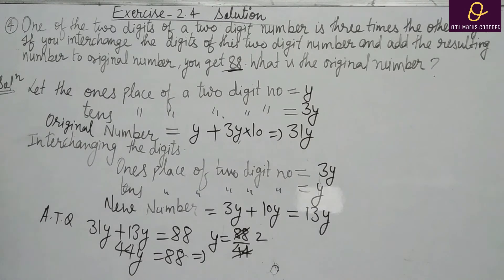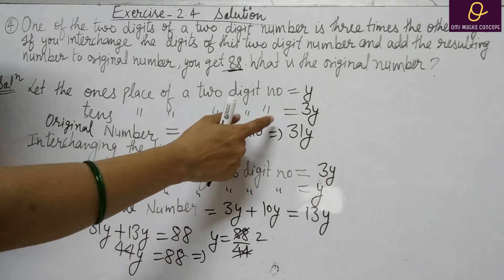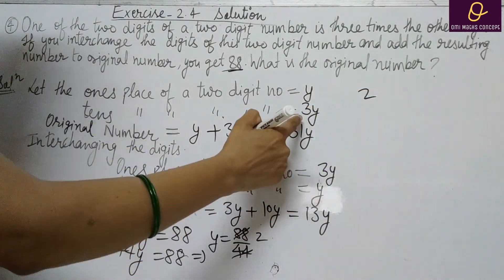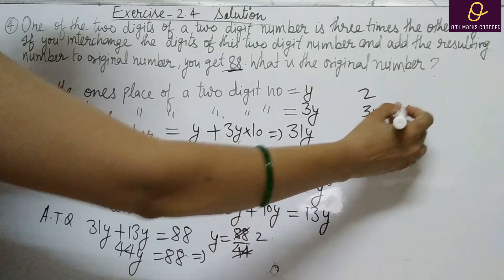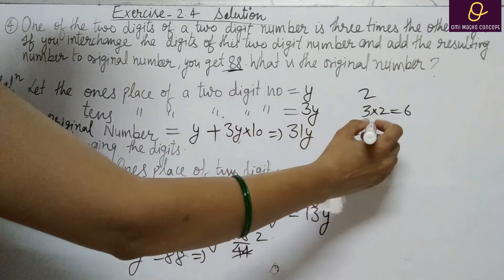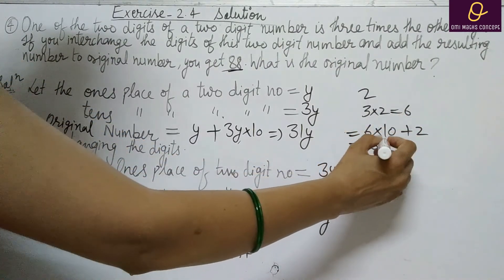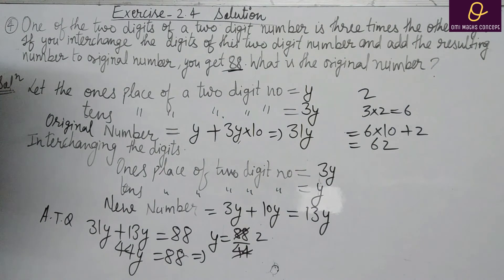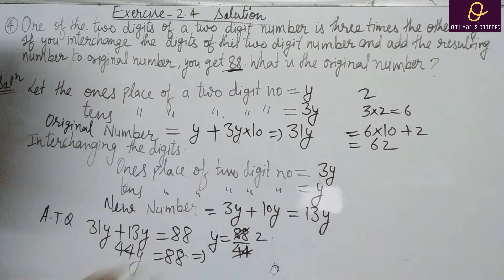अब इसकी value return करनी है. So the one's place of the two-digit number equal to 2, और 10th place 3 into 2, that is 6. Number आपके पास क्या आएगा? 6 into 10 plus 2, that is 62. या directly 31 into 2 करेंगे, तब भी 62 आएगा.